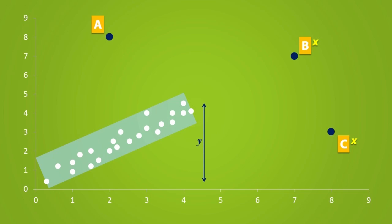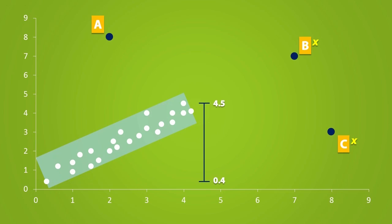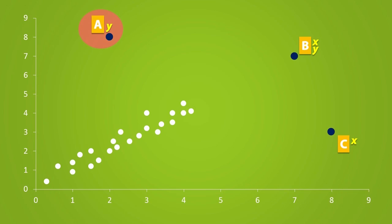In the Y direction, 0.4 is the smallest Y value and 4.5 is the largest Y value. An outlier in the Y direction refers to any value that doesn't fall within the interval between 0.4 and 4.5. Point C falls within this interval because it has a Y value of 3. However, points A and B do not fall within this interval, so they are considered to be outliers in the Y direction. To quickly recap: point A is an outlier in the Y direction, point B is an outlier in both the X and Y direction, and point C is an outlier only in the X direction.